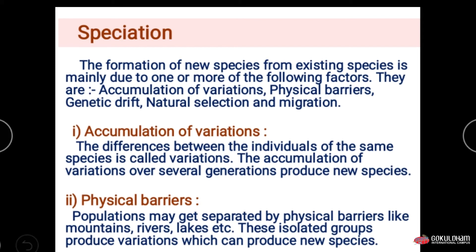The second factor is physical barrier. A population may get separated by physical barriers like mountains, rivers, and lakes. These isolated groups produce variation which can produce new species. Due to physical barriers, the isolated group produces certain variations necessary to survive in those conditions, leading to new species.